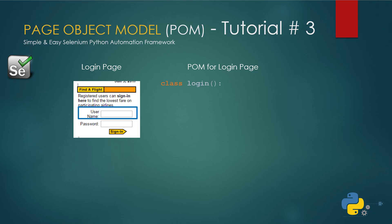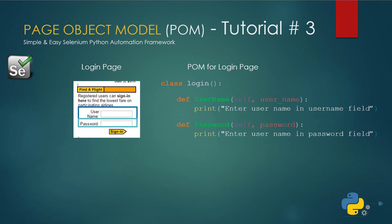On this login page we have three elements: username, password, and sign in. So we need to create three methods in this class. For username we'll create a method called 'username' and it will take one parameter, username. Next we will create a password method and a password method takes a parameter, password. Next we'll create a method for the sign in button. Usually it's good practice to name your methods exactly as they appear on your application screen.